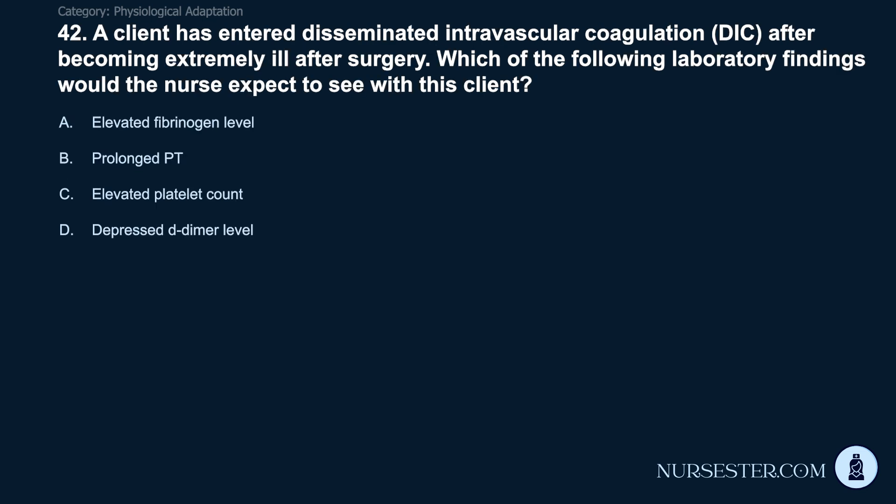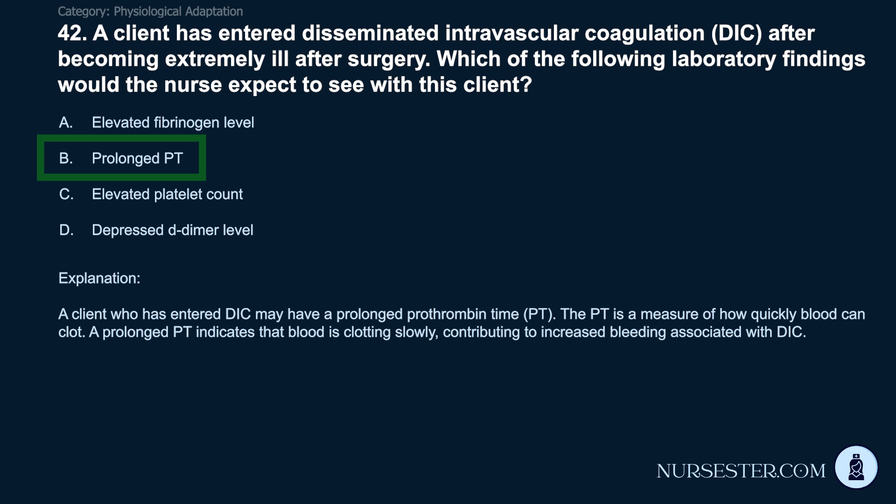Question 42/43: A client has entered disseminated intravascular coagulation (DIC) after becoming extremely ill after surgery. Which laboratory findings would the nurse expect? A) Elevated fibrinogen level. B) Prolonged PT. C) Elevated platelet count. D) Depressed D-dimer level. Correct answer: B. Prolonged PT. A client in DIC may have a prolonged prothrombin time (PT), which measures how quickly blood can clot. A prolonged PT indicates slow clotting, contributing to increased bleeding associated with DIC.